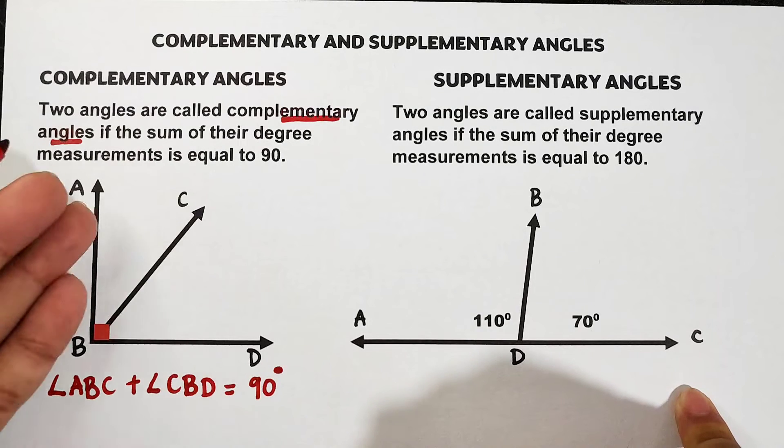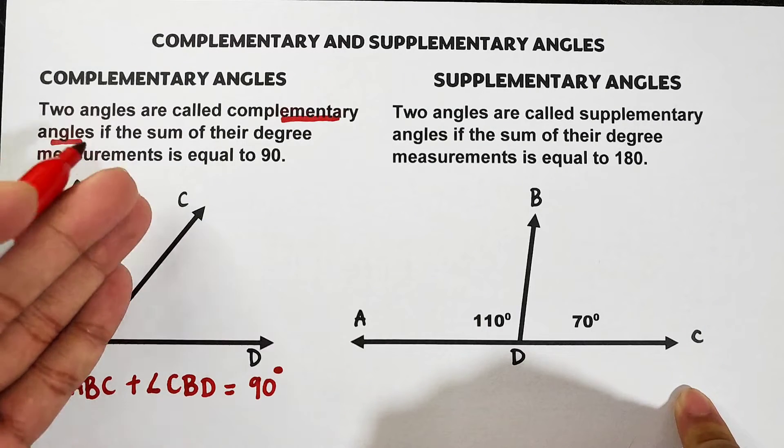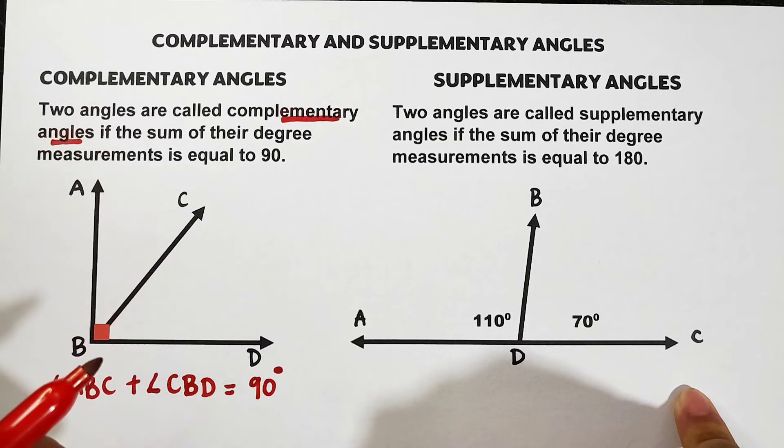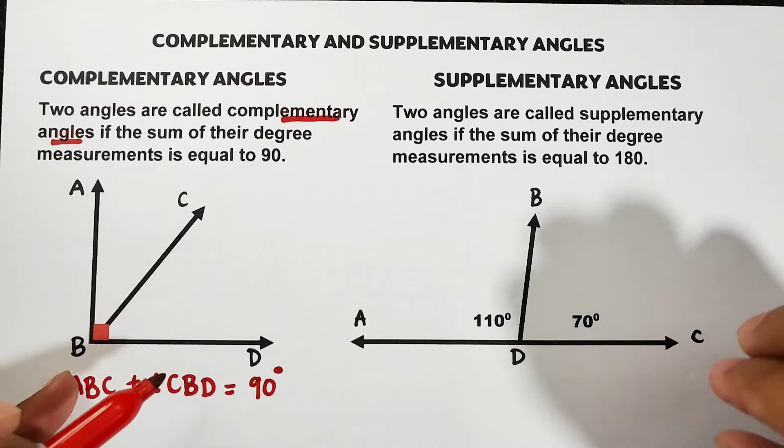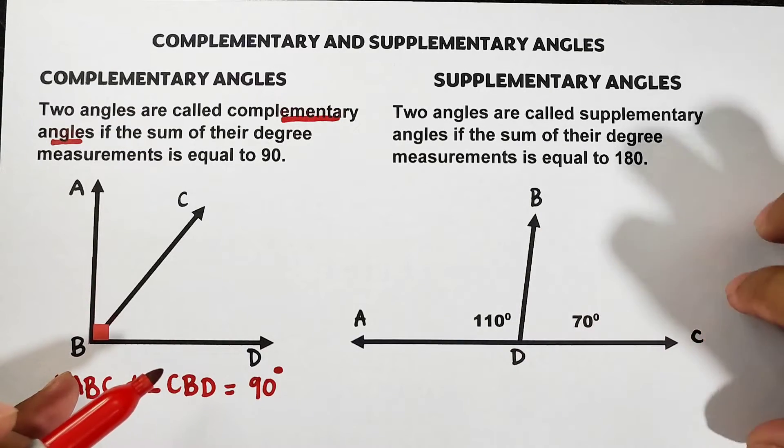So definitely angle ABC and angle CBD are complementary angles because their sum is equal to the 90 degree angle. Now let's move on to the second illustration.